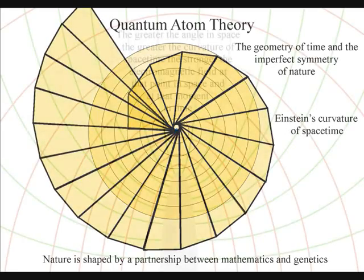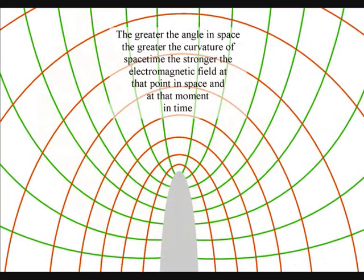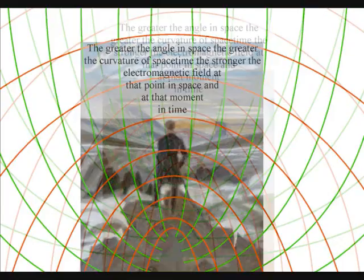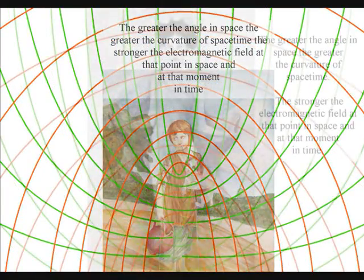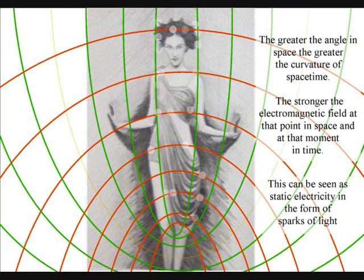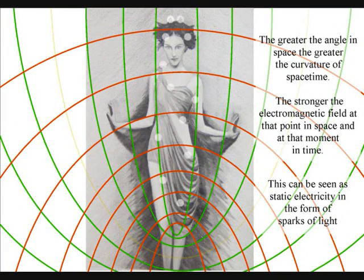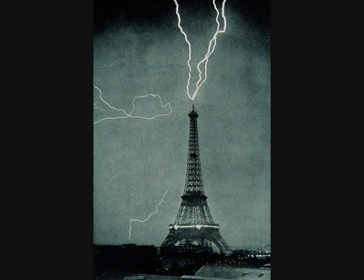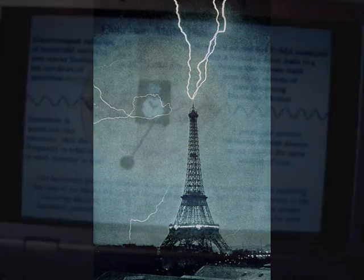The greater the angle in space, the greater the curvature of spacetime, the stronger the electromagnetic field at that point in space, and at that moment in time. This can be seen as sparks of light associated with static electricity. The atoms will even distort the geometry of spacetime, creating electrostatic discharge in the form of lightning.